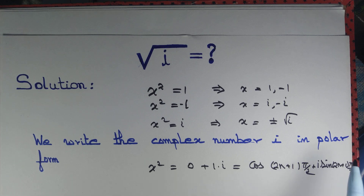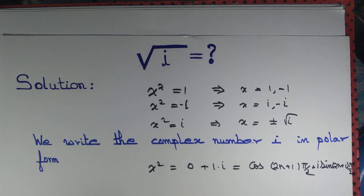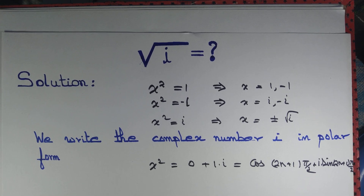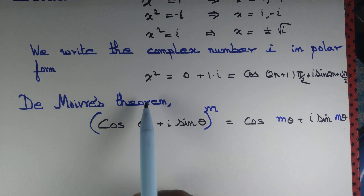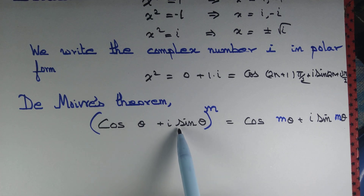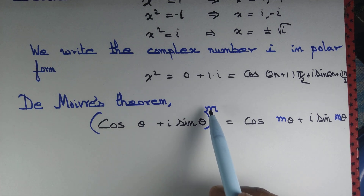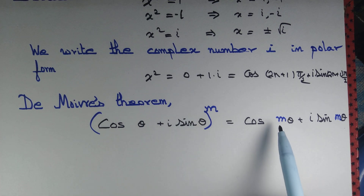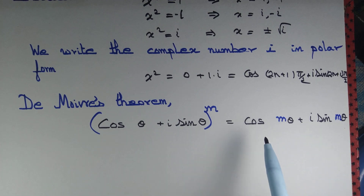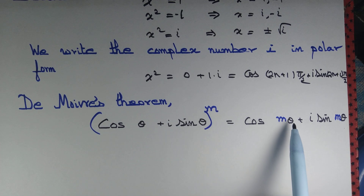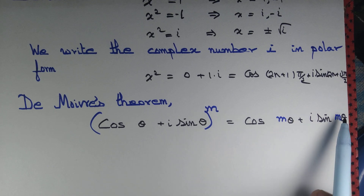The objective of writing the complex number in polar form is to apply De Moivre's theorem. Let us recall De Moivre's theorem: (cos θ + i sin θ)^m = cos(mθ) + i sin(mθ). What we are doing is multiplying the angle by the power.